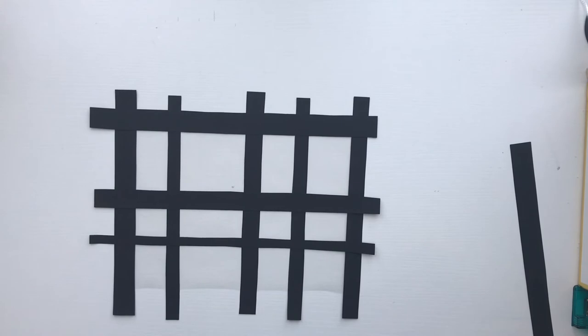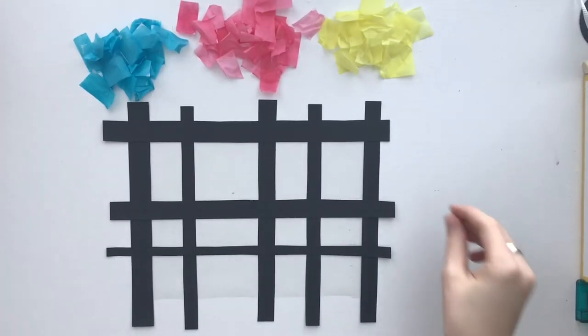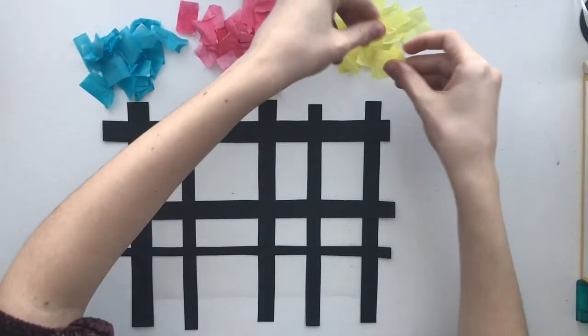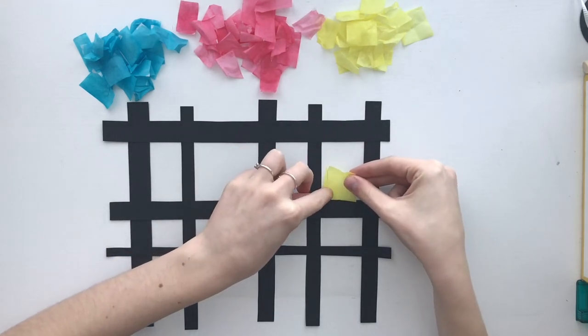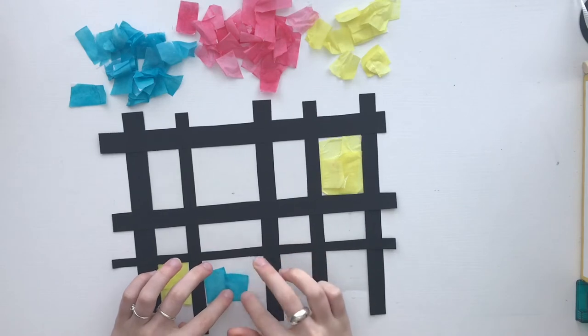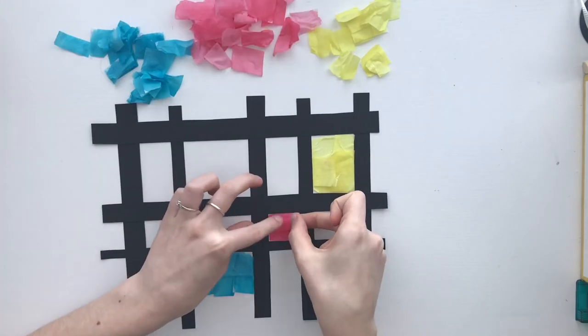When you're done, it will look similar to this. Get blue, red, and yellow tissue paper and cut them into small squares. Use these to fill in the gaps, leaving some gaps empty to let more light through. Use only one color per square.